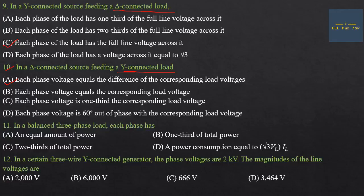Eleventh question: In a balanced 3-phase load, each phase has equal impedance and carries equal current with equal power. Twelfth question: In a 3-wire star-connected generator with phase voltages of 2 kV, find the line voltage. Line voltage equals root 3 into phase voltage equals root 3 into 2000 equals approximately 3465 volts. Option D is the answer.